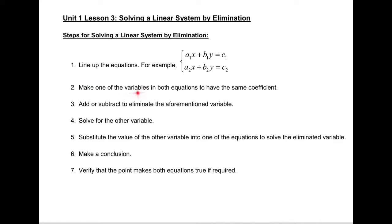Second, make one of the variables in both equations have the same coefficient, which means either the numbers in front of the x are the same, or the numbers in front of the y-term are the same. Third, we use addition or subtraction to eliminate the variable that has the same coefficient in order to solve for another variable. And once we have the value of one variable, we can substitute back into one of the equations to solve for the other variable, and then we will have our solution.